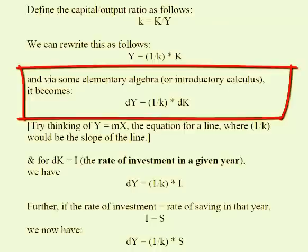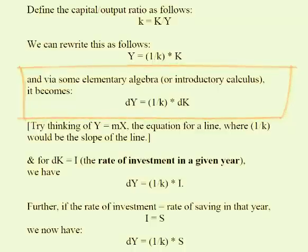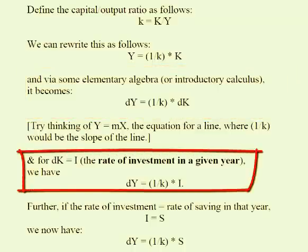More to the point, we want to change that capital stock idea into a flow idea. The change in K is going to be defined as the rate of investment in a given year. So we're going to substitute I for change in K, or dK, and now we have dY equals 1 over lowercase k times I, the rate of investment.